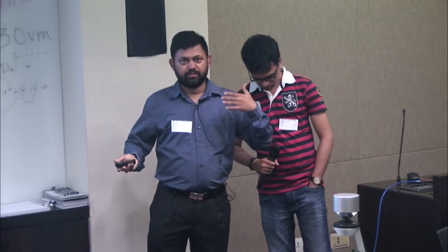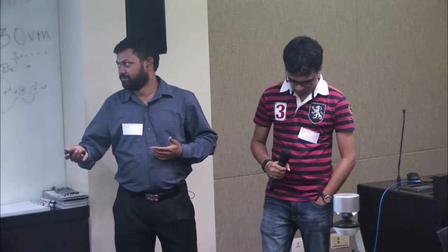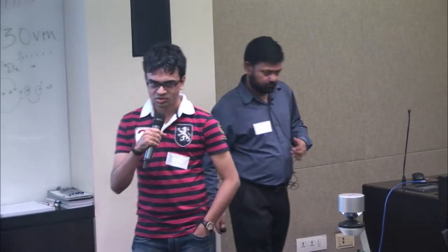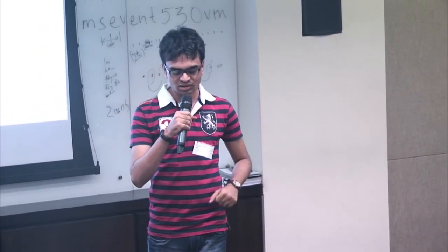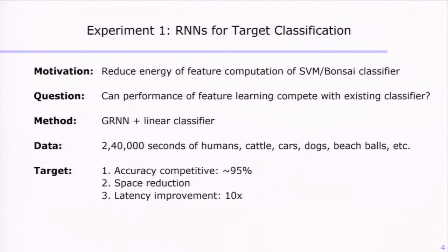Pranshu will now speak about the experiments in the radar domain, which involves RNNs. Our objective was to try out the RNN on the human or non-human dataset to see whether we can get competitive accuracy while getting rid of the cost of feature computation, which was present in the SVM and Bonsai techniques. The way the RNN construct works is that it rolls over to a fixed number of time steps.